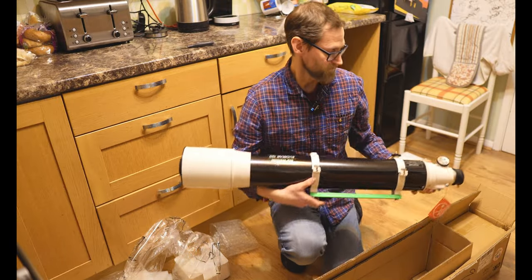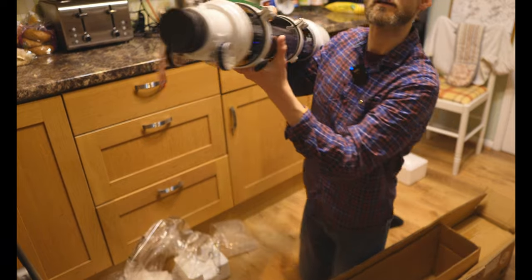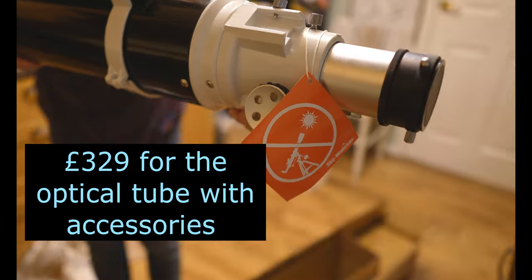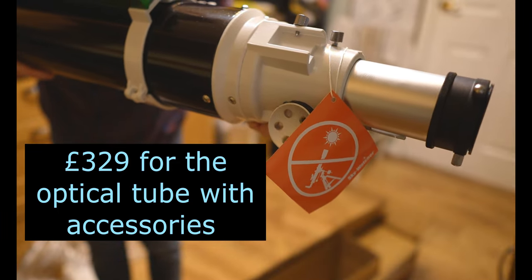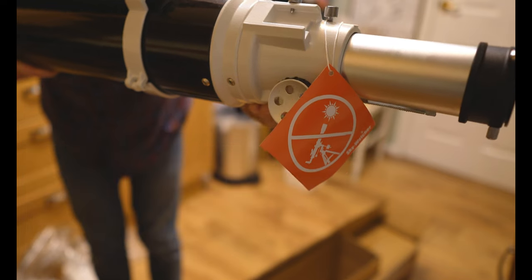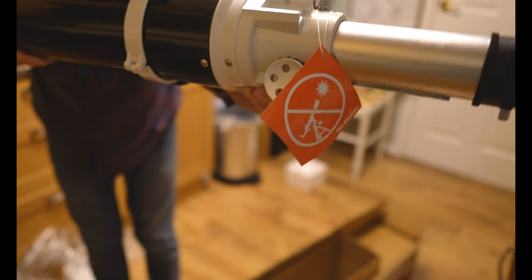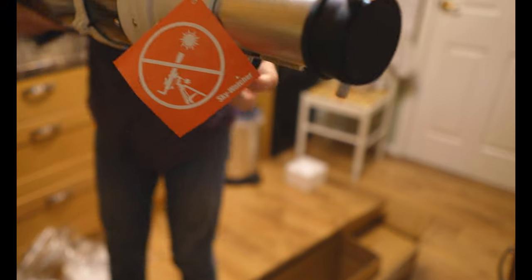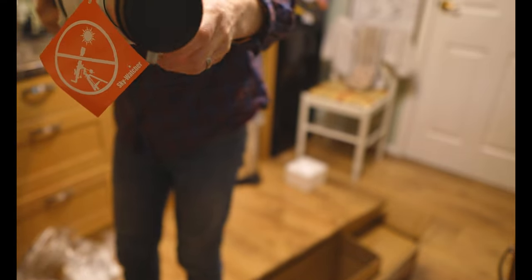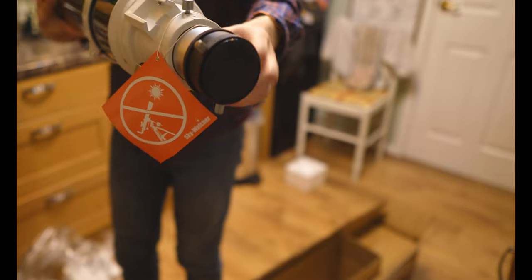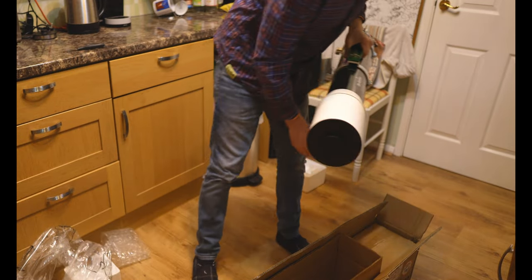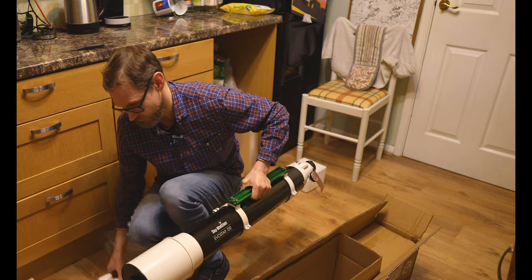Focuser wise, it's a basic two inch focuser and it's single speed, not dual speed. You wouldn't expect it at this price point. Pretty much you can pay a lot more than this entire telescope for an upgraded focuser, so it's a basic but certainly workable focuser with lots of travel as you can see on the draw tube. There'll be a two inch to one point two five inch adapter and this telescope comes with a two inch diagonal and a 50 mil finder which must be in the box at the back here.